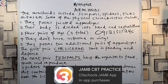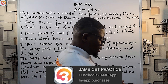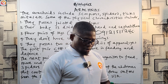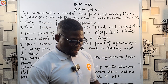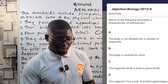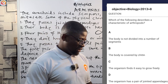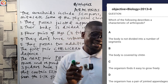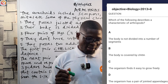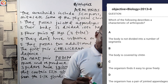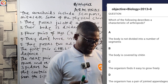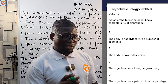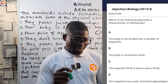Let's go to the app to look at some questions on this phylum. A 2013 question asks: 'Which of the following describes a characteristic of Arthropods?' Option A says the body is not divided into segments — that's false. Option B says the body is covered by chitin — that's correct, since the exoskeleton is covered by chitin.